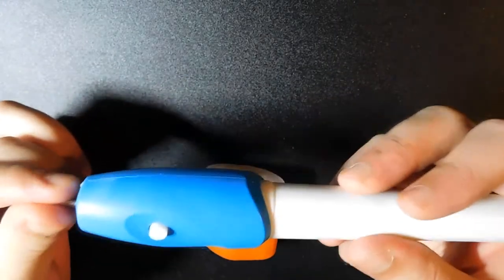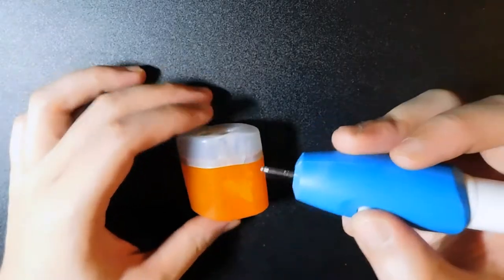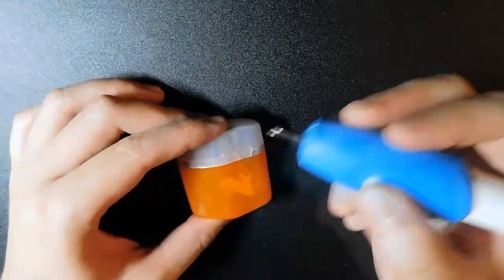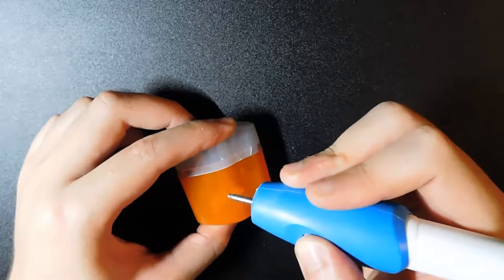So the next thing we have is this engraver and it takes two AA batteries. And we're just going to put our initials on this little plastic pencil case. It might be loud.